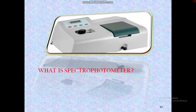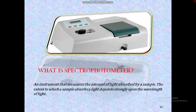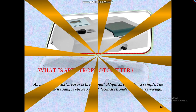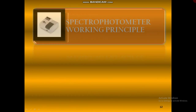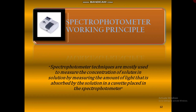A spectrophotometer is defined as an instrument that measures the amount of light absorbed by a sample. The extent to which a sample absorbs light depends strongly upon the wavelength of light. Spectrophotometer techniques are mostly used to measure the concentration of solute in solution by measuring the amount of light that is absorbed by the solution in a cuvette placed in the spectrophotometer.